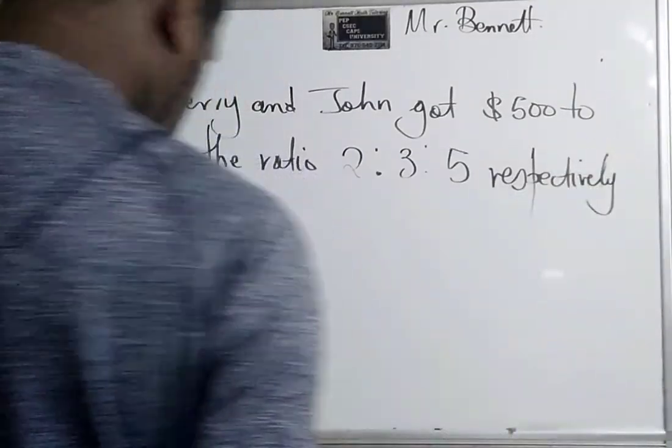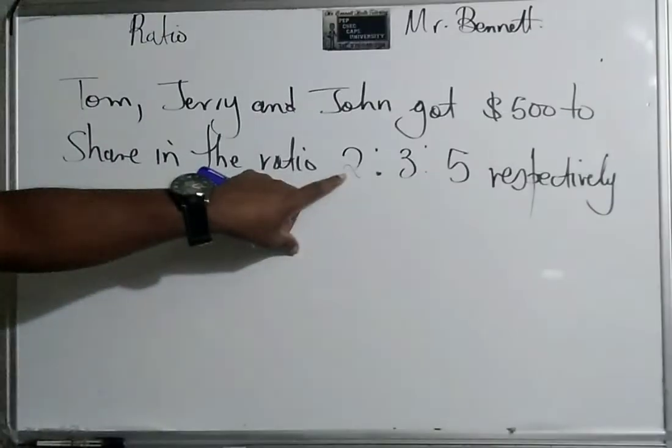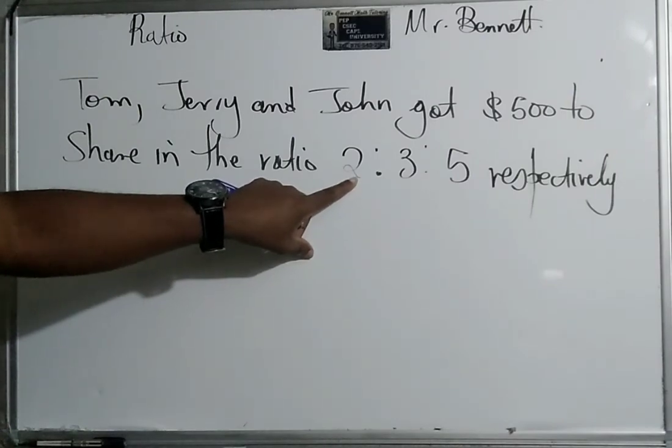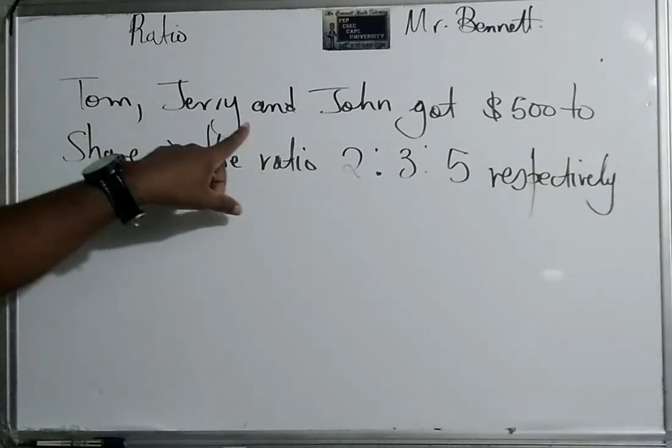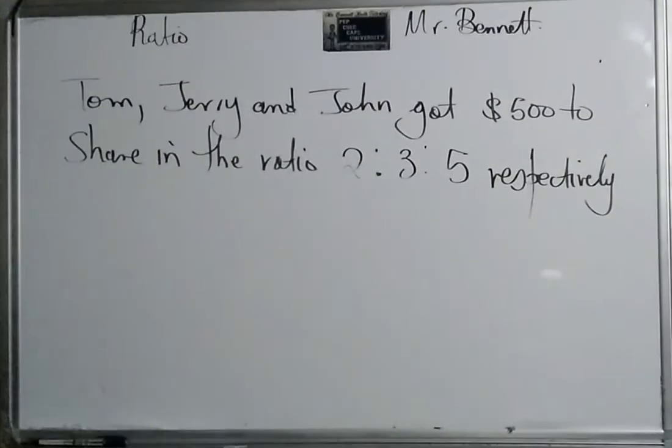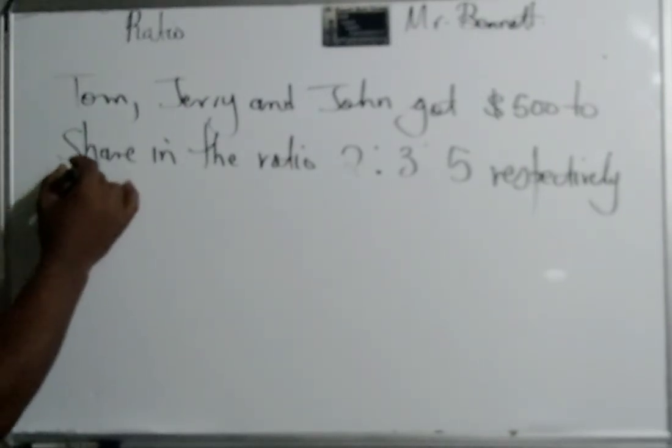And I said respectively. What does respectively mean? It means the first name goes to the first number, so 2 will go to Tom, 3 to Jerry, and 5 to John, because it's in that order.